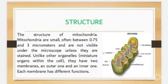Let's talk about mitochondria's internal structure. Mitochondria are small, often between 0.75 and 3 micrometers, and are not visible under the microscope unless they are stained. Unlike other organelles within the cell, they have two membranes — an outer one and an inner one — each with different functions.